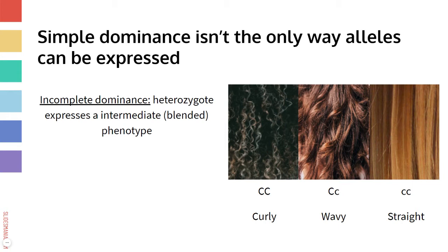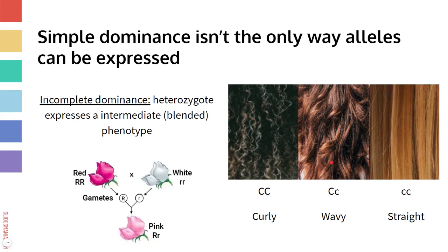It's sort of a blend of the two extreme phenotypes. An example of this would be if you have curly hair being sort of dominant over straight, where curly is capital C capital C, and straight is lowercase c lowercase c. A heterozygous person with one big C and one little c might show a wavy kind of hair in between curly and straight. Another example in flower color — if you have a red flower and a white flower and cross them together to get a heterozygous flower, instead of the red being completely dominant over the white, you'd get a sort of mixing of the two colors and you'd end up with a pink flower. So in incomplete dominance, you get a blended phenotype.